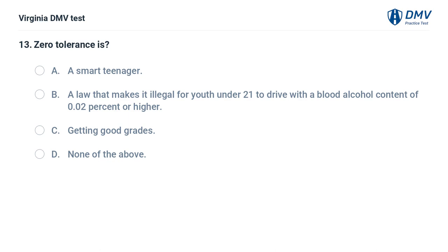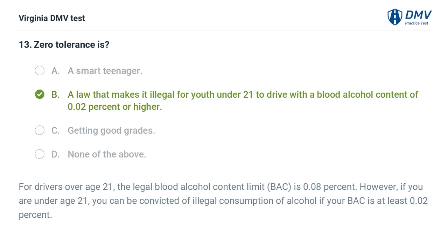Zero tolerance is: A. A law that makes it illegal for youth under 21 to drive with a blood alcohol content of 0.02% or higher. For drivers over age 21, the legal blood alcohol content limit (BAC) is 0.08%. However, if you are under age 21, you can be convicted of illegal consumption of alcohol if your BAC is at least 0.02%.